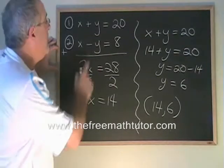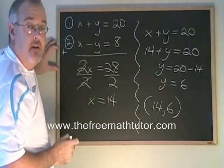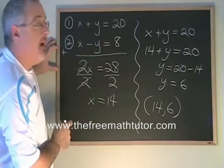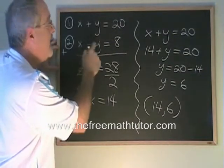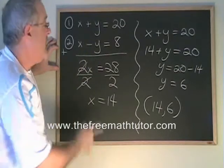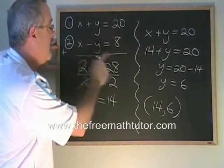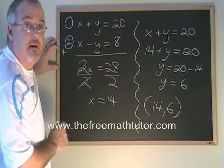But it will only work if one of the variables, in this case the y, has equal and opposite numerical coefficients. Positive y plus negative y cancels to zero. That gets rid of the y, leaving us with an equation with only x, and that we can solve.